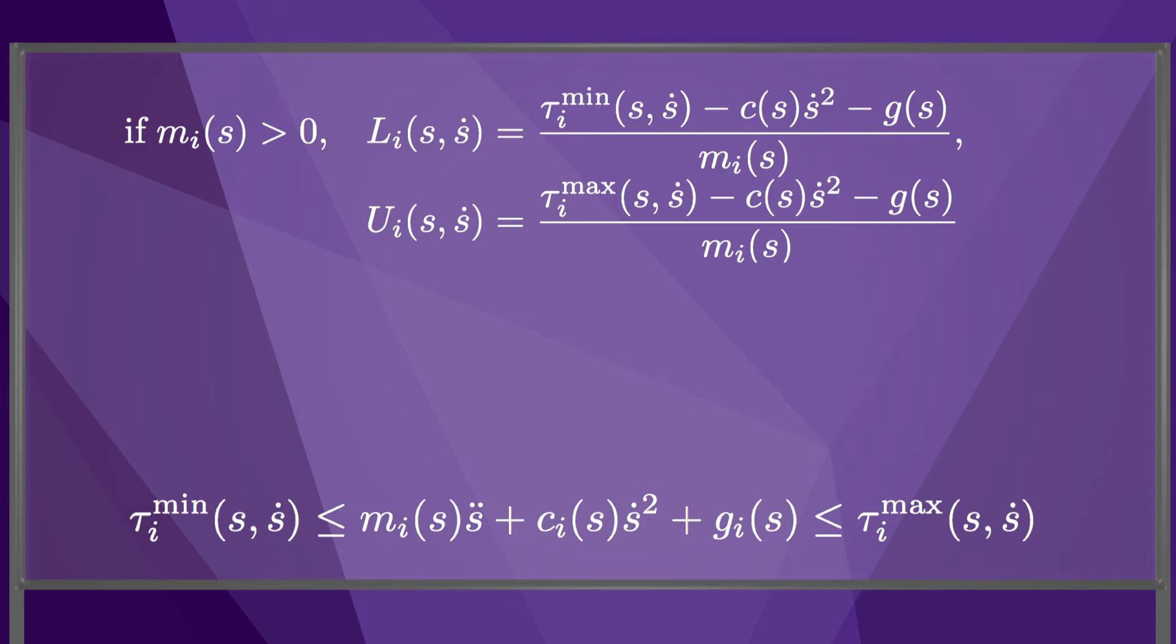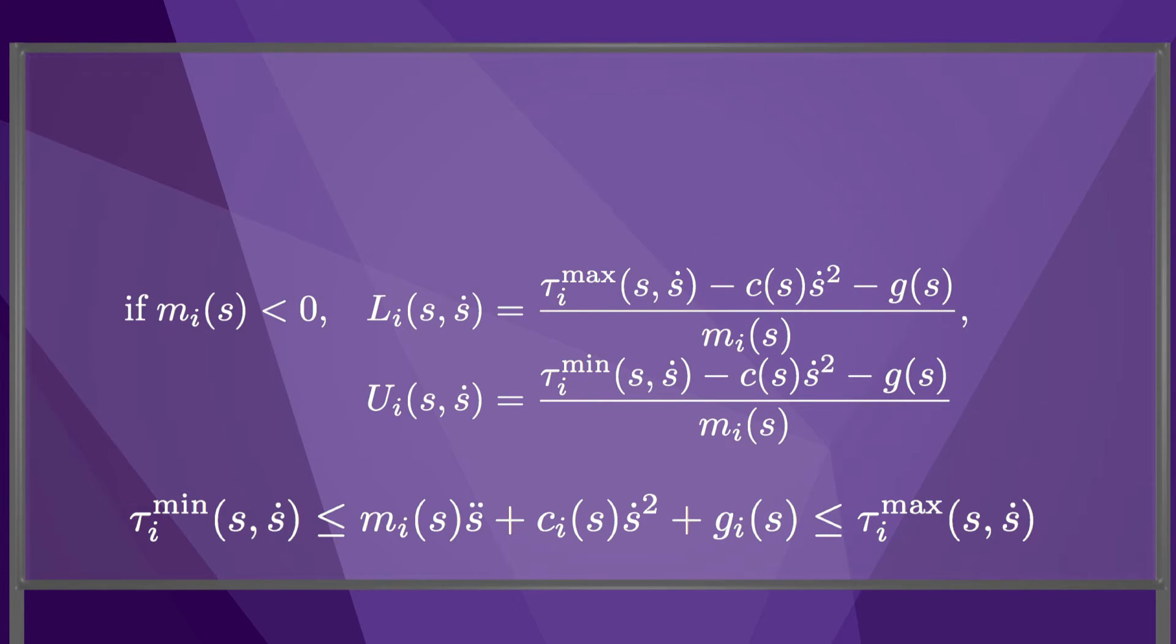If m_i is negative, then L_i and U_i are given by these equations. These equations tell us the maximum and minimum accelerations s double dot along the path that joint i will allow at the state (s, s dot).